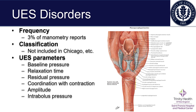There are however some upper esophageal sphincter parameters that we utilize to differentiate potential disorders. We examine baseline pressure, relaxation time, residual pressure, coordination of swallowing pressures with contraction, the amplitude, as well as the intrabolus pressures, and we'll talk about some of those moving forward.